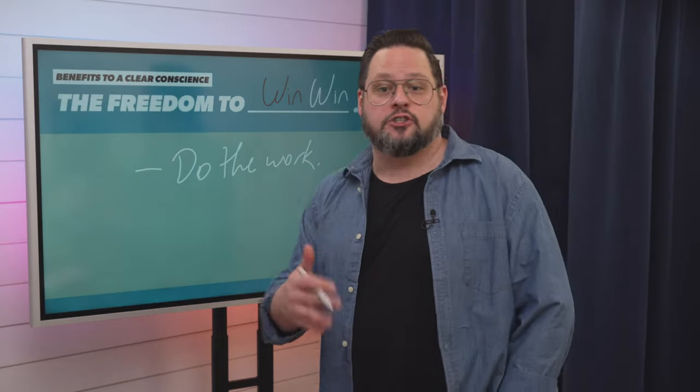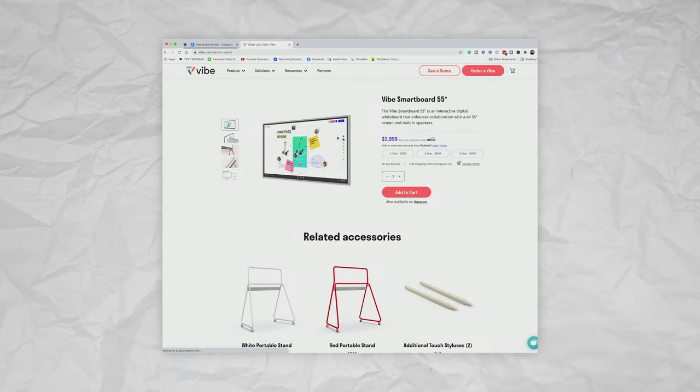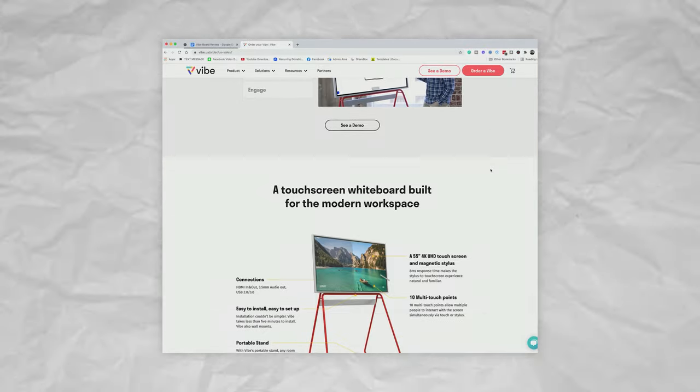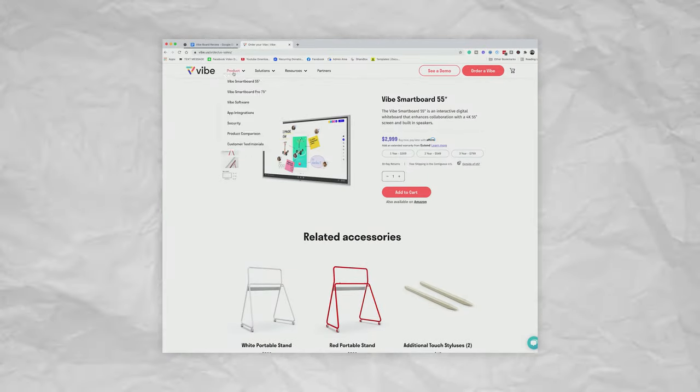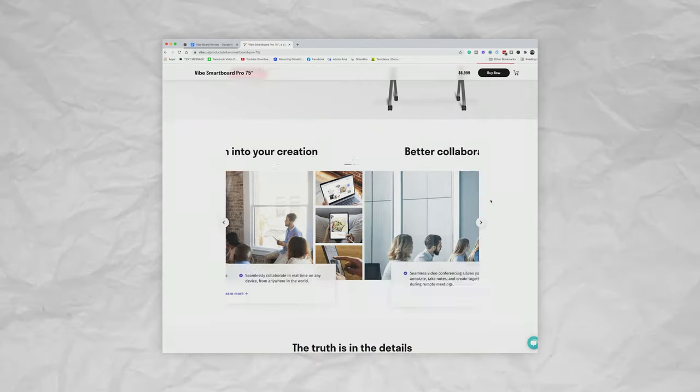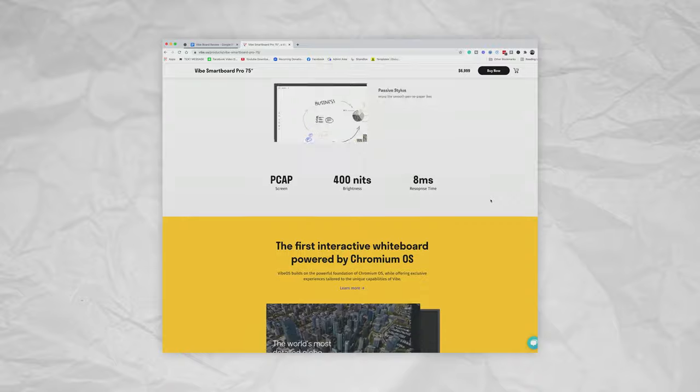So that's kind of how I'm using it on a regular basis. Now I'm using the 55 inch model, the original. It's plenty big but if you want something even larger, Vibe just released a 75 inch version that is massive. If you want to make a statement go for the 75 inch.